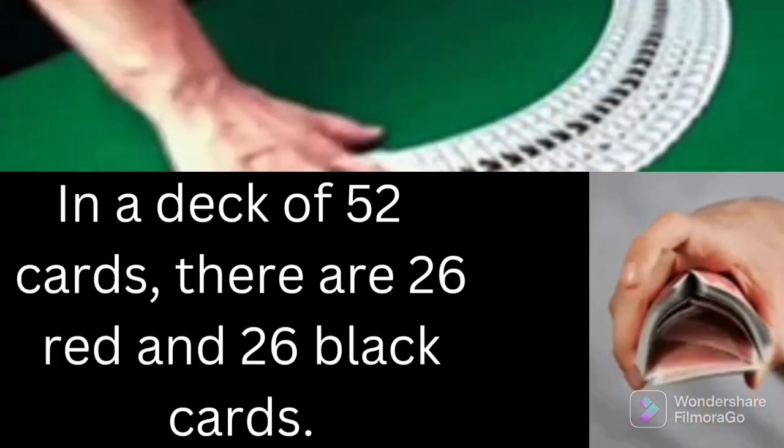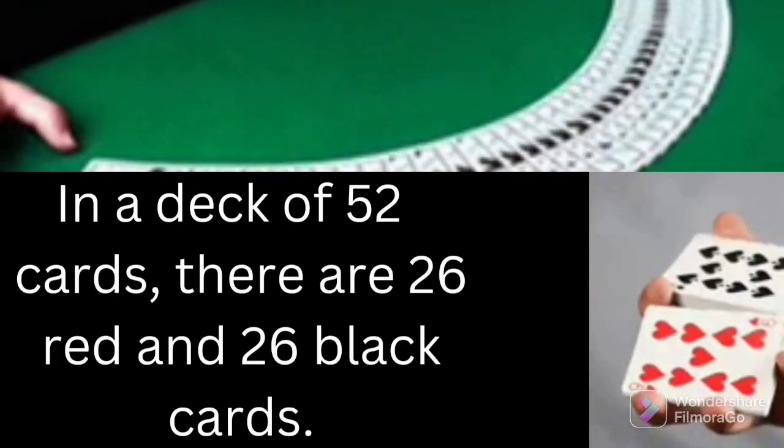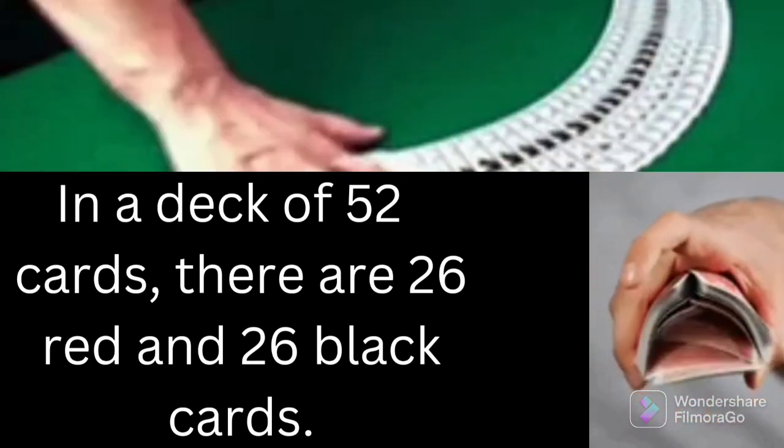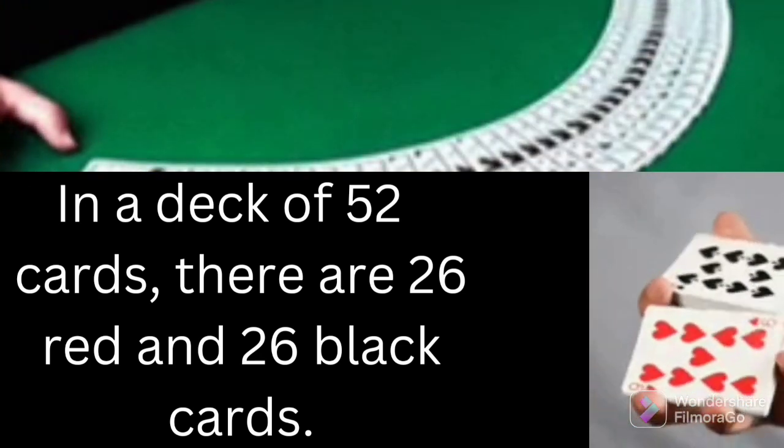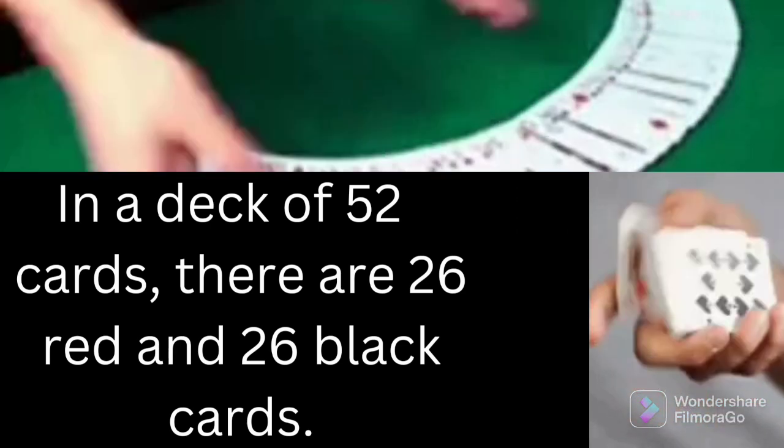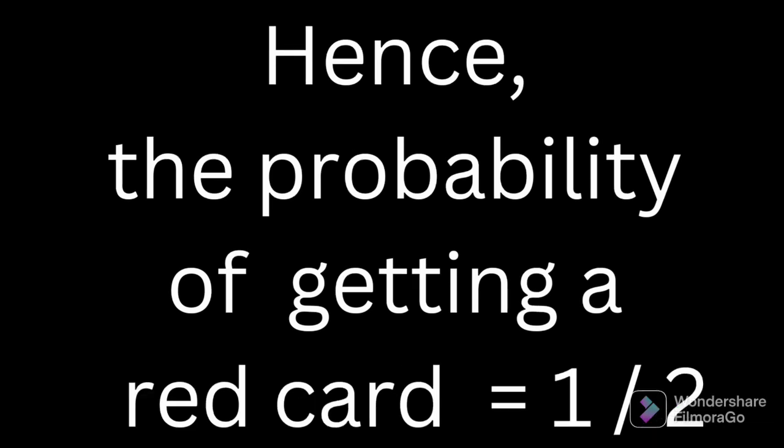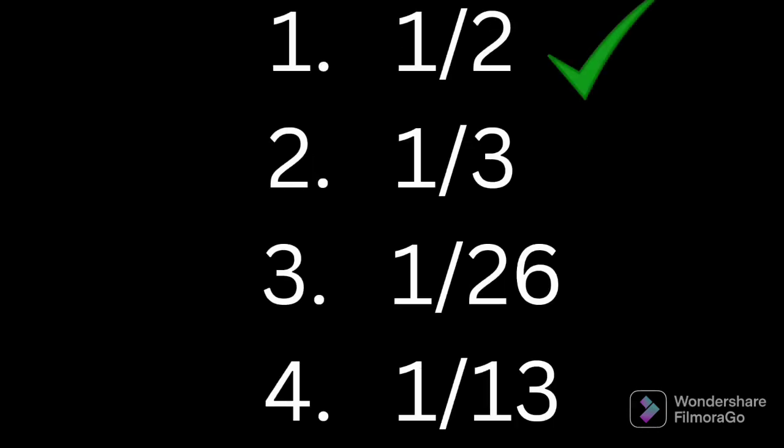We know that in a deck of 52 cards, there are 26 red cards and 26 black cards. Therefore the probability of getting a red card is equal to 26 by 52. Further simplification gives the probability of getting a red card is equal to 1 by 2. Hence the first option 1 by 2 is the correct answer.